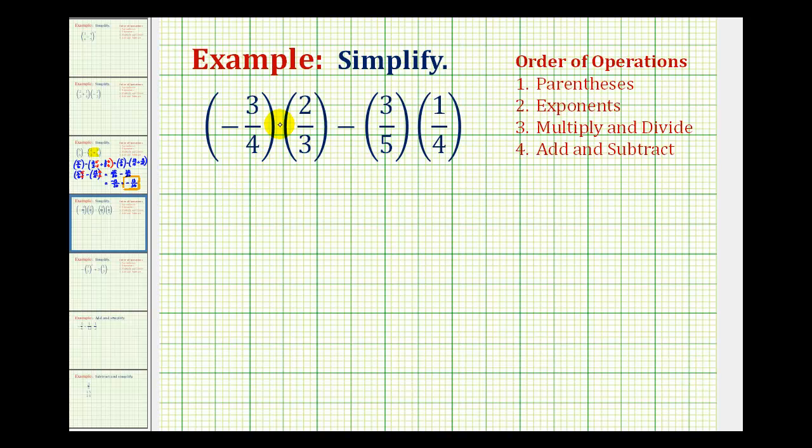Notice in this expression we have multiplication here and here and we also have subtraction. Following the order of operations, we need to multiply before we subtract. So we'll find these two products before we subtract.